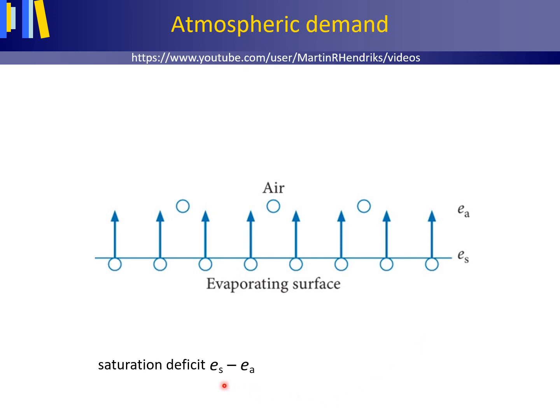The difference between ES and EA is called the saturation deficit in kPa. The larger the saturation deficit, the higher the evaporation rate will be.